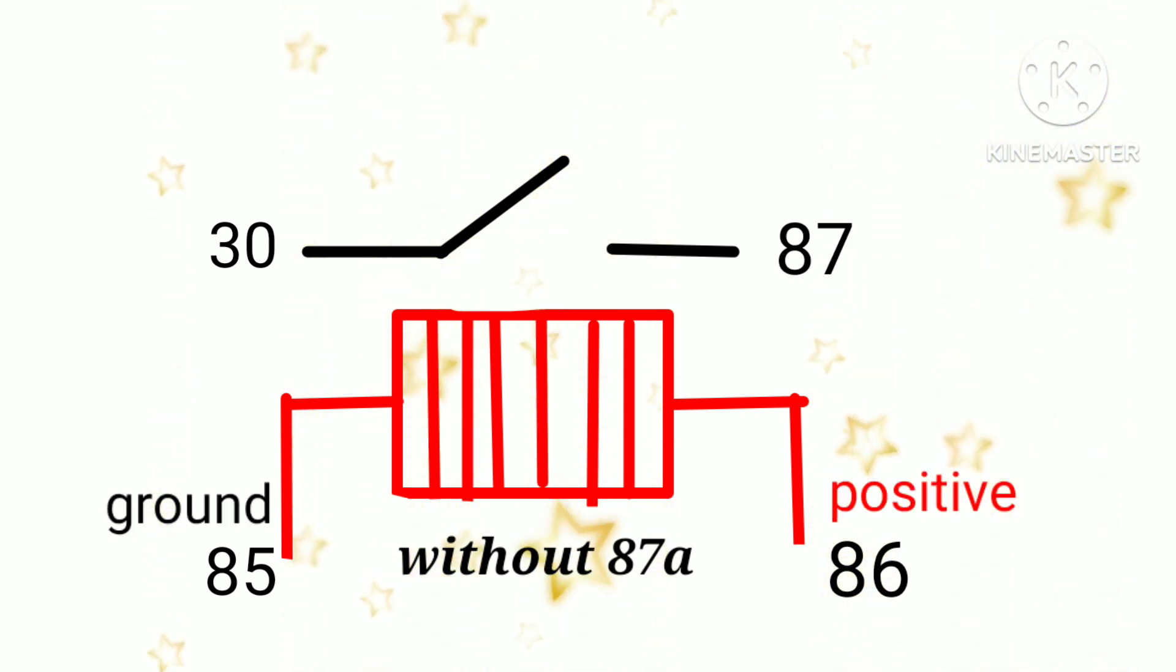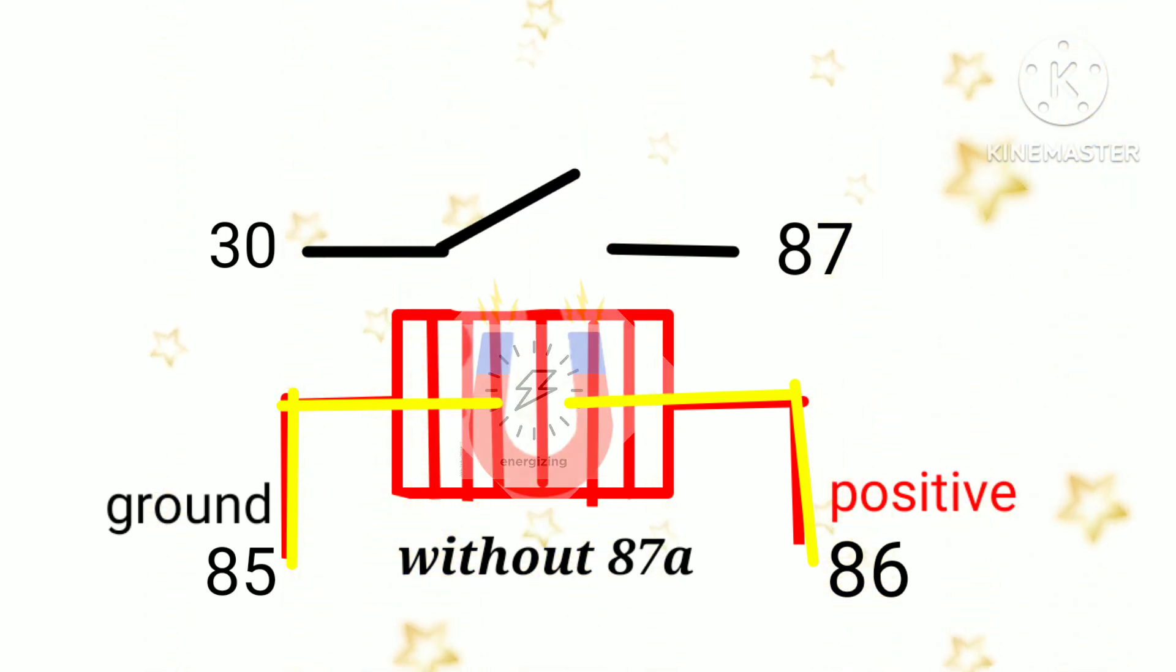When you put positive to 86 and ground to 85 of relay, the coil inside energize and magnetize. That's why number 30 and 87 will connect and the current will flow.